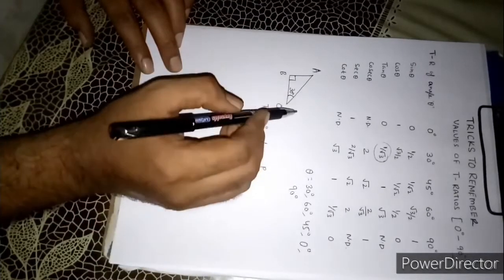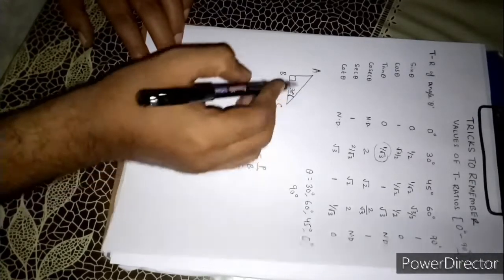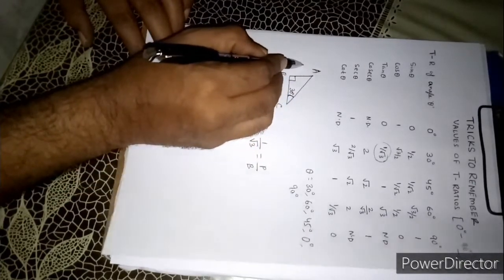So what is perpendicular here? Opposite to the given angle, that is angle of inclination. The side is AB. This is perpendicular.